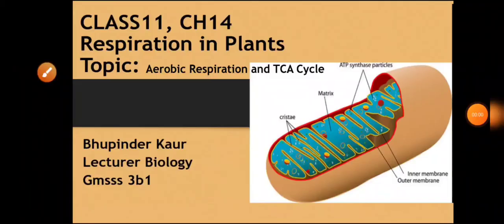Today we will be discussing in detail aerobic respiration and TCA cycle. Aerobic respiration has four steps if the respiratory substrate is glucose: first step is glycolysis, second step is oxidative decarboxylation, third step is TCA cycle, and fourth step is electron transport chain. Today we will be discussing the second step, oxidative decarboxylation, and the third step, TCA cycle.